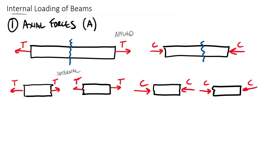This is fundamental to what we do in the method of sections and method of joints — we cut either around a joint or through a truss in a section and expose these internal forces.